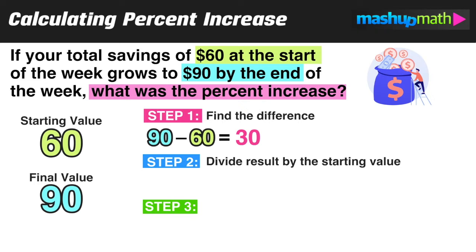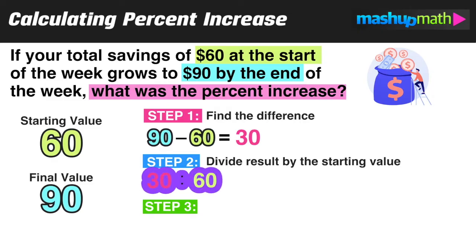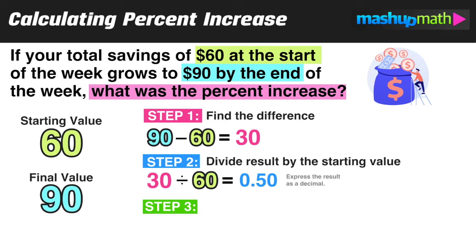In step two, we divide the result by the starting value. The result refers to the number you got from step one — in this case, 30 — and we divide that by the starting value, which is 60. So 30 divided by 60 equals 0.50. The important key for step two is to always express your answer as a decimal, not as a fraction.